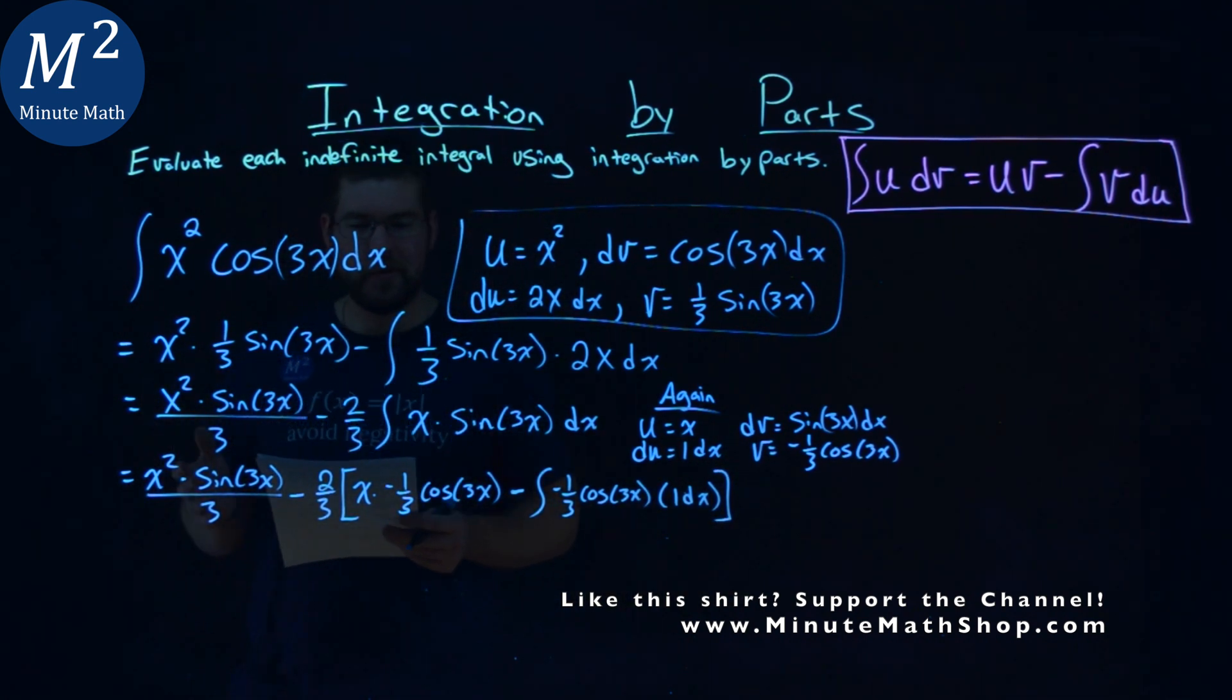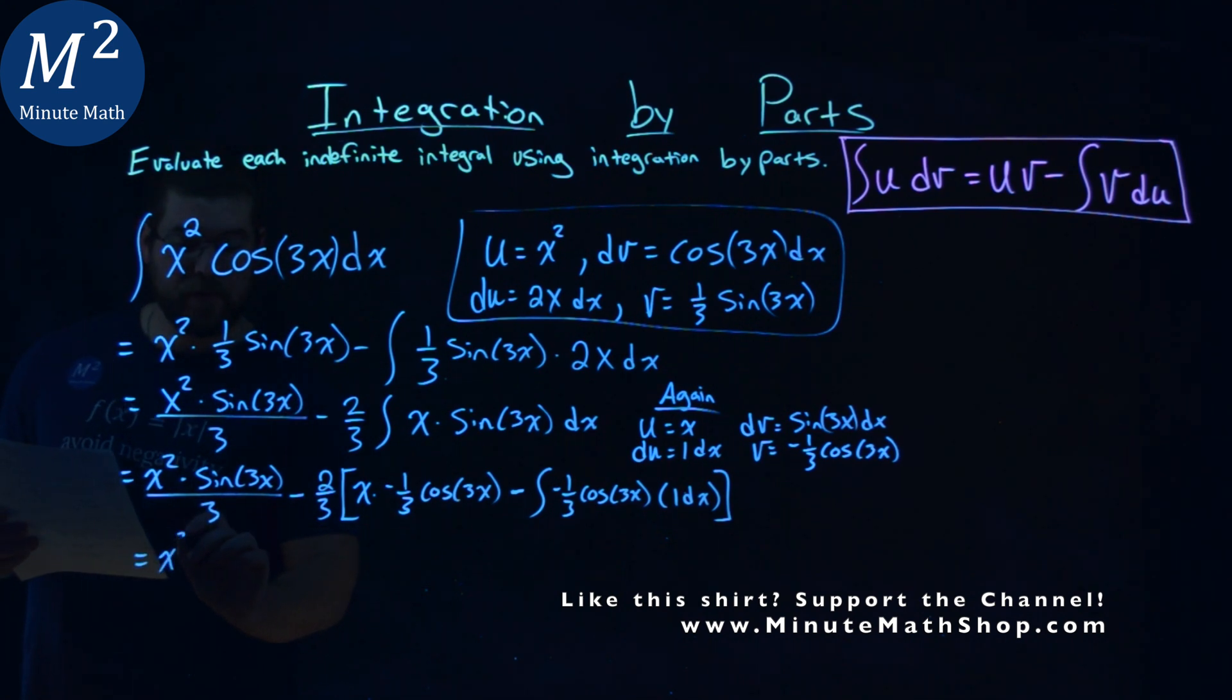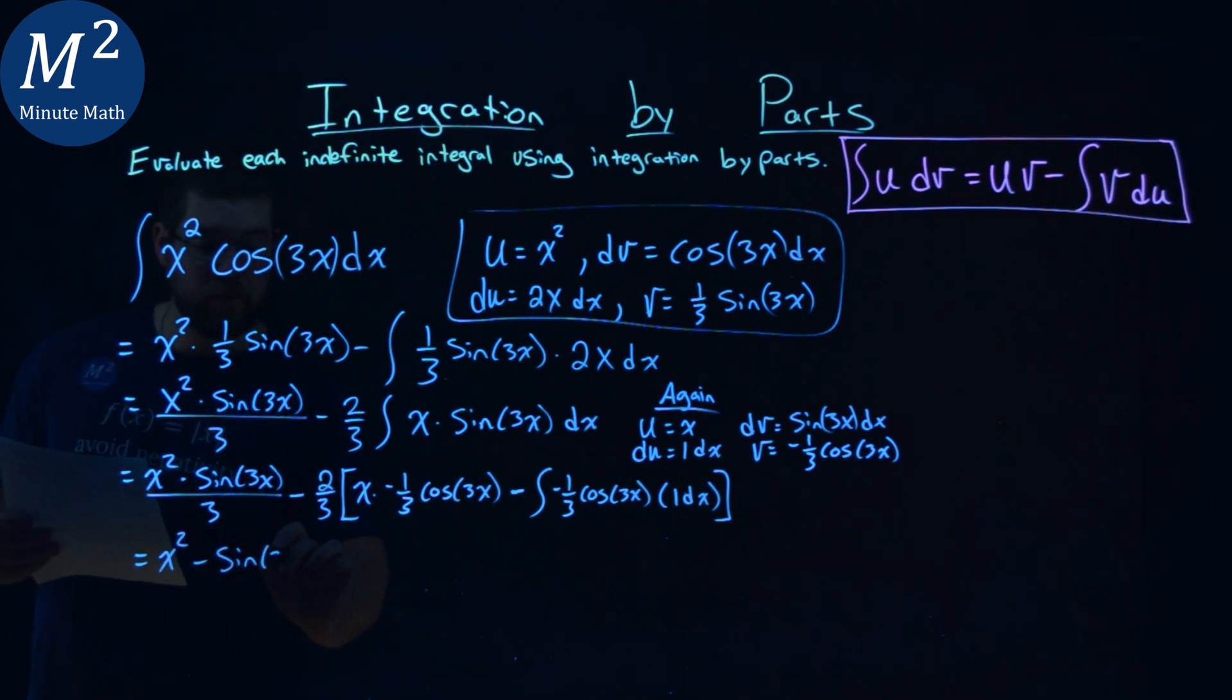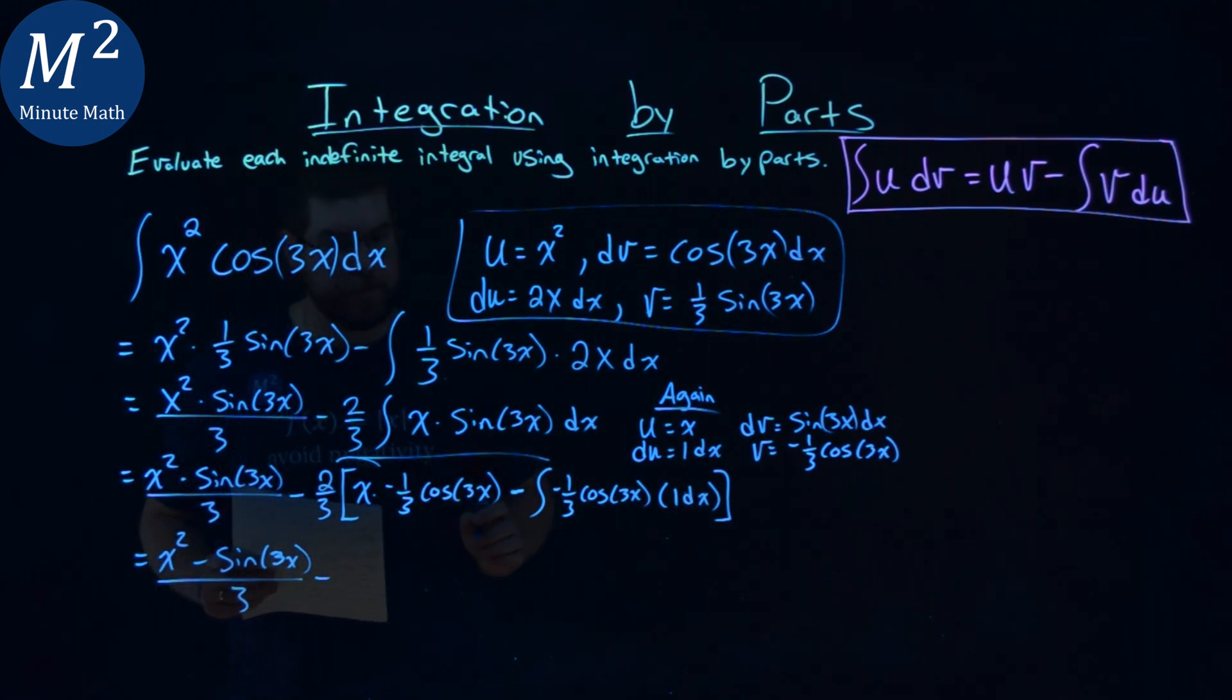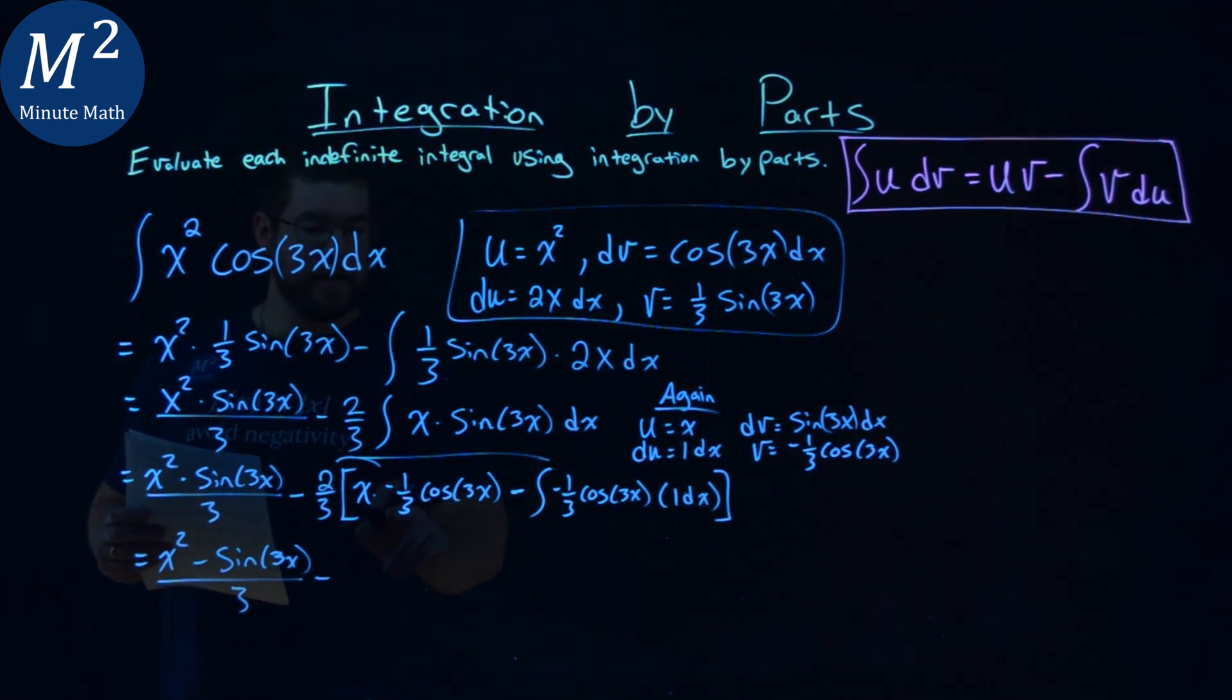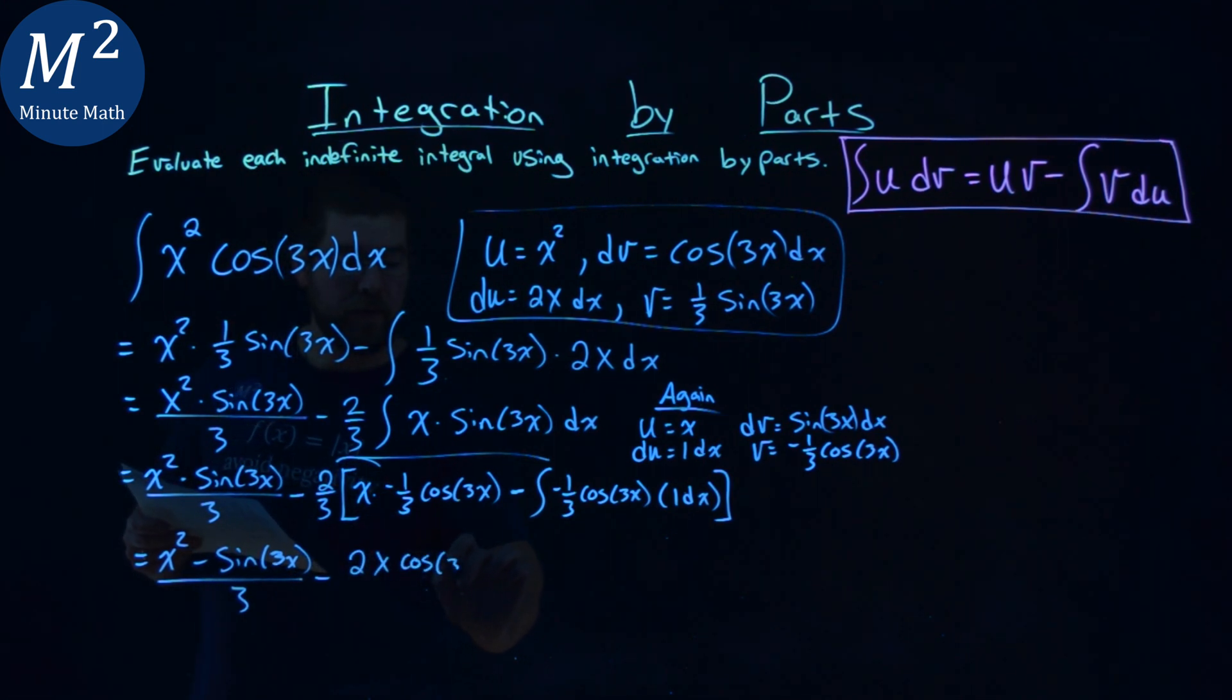I'm going to do a lot of steps at once here. We have x squared sine of 3x over 3, minus we're going to distribute this 2 thirds to both parts. So 2 thirds times negative 1 third gives us 2 ninths. We have 2 in the numerator, we have x cosine of 3x, don't forget the ninth in the denominator.